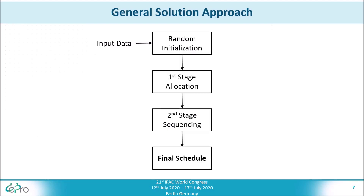The scheduling problem is solved in two stages. After receiving the input data, which consists of the set of orders including their processing and changeover times, as well as the set of lines, a random initialization of the schedule is performed. After that, in the first stage, the allocation of the orders to the lines is performed.